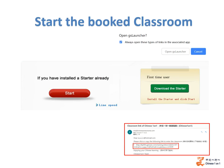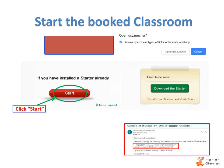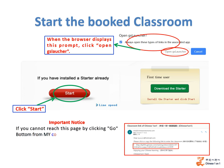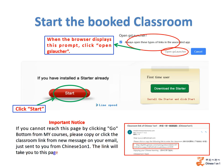Now let's start the booked classroom. The first step is to click Start. When the browser displays this prompt, click Open GSLAUCHER. Important notice: if you cannot reach this page from the Go button, please copy or click the classroom link from the new message on your email, just sent to you from Chinese One-on-One. The link will take you to this page.